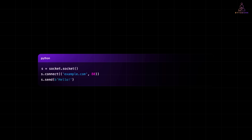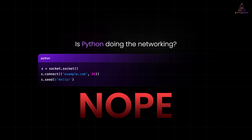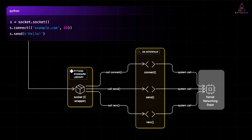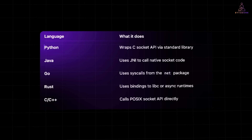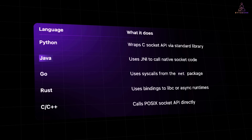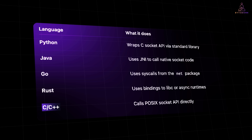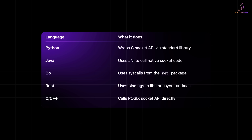Just like that, you have created your own real-time socket connection. It's the same core idea used in large-scale systems: open a socket, connect, talk. Now, when you write code like this in Python, you might wonder — where are these methods really implemented? Is Python doing the networking? The short answer: no. Python isn't doing the heavy lifting. It's just calling into lower-level code that's already built into your operating system. Python has a socket module written in C that wraps system-level socket APIs. These APIs come from the OS kernel, not Python itself. So when you call .connect() or .send(), Python internally calls C functions like connect, send, and recv, which are part of your system's POSIX sockets API.